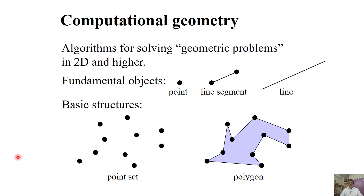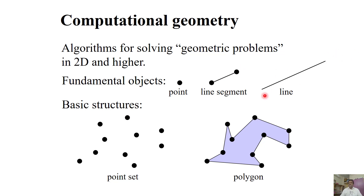Computational Geometry is basically algorithms to solve geometric problems — in 1D, 2D, or higher dimensions. Let us start with the fundamental geometric objects. The first object is a point: it could be 1D, 2D, or any dimension. If it is 2D, each point is associated with x and y coordinates; if 3D, x, y, z; if 1D, just a point on the real line. Theoretically it could be D-dimensional. Another object is the line segment — we know the start point and end point. This is also in any dimension. A line is one whose start and end points are not given.